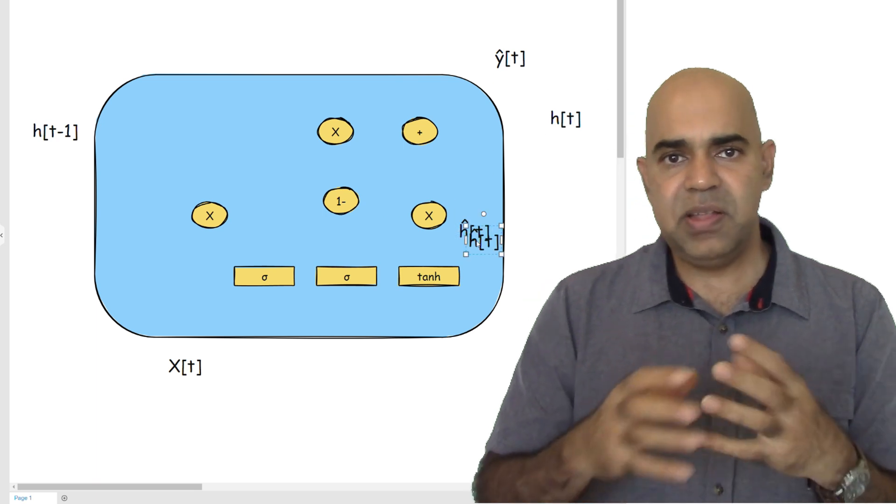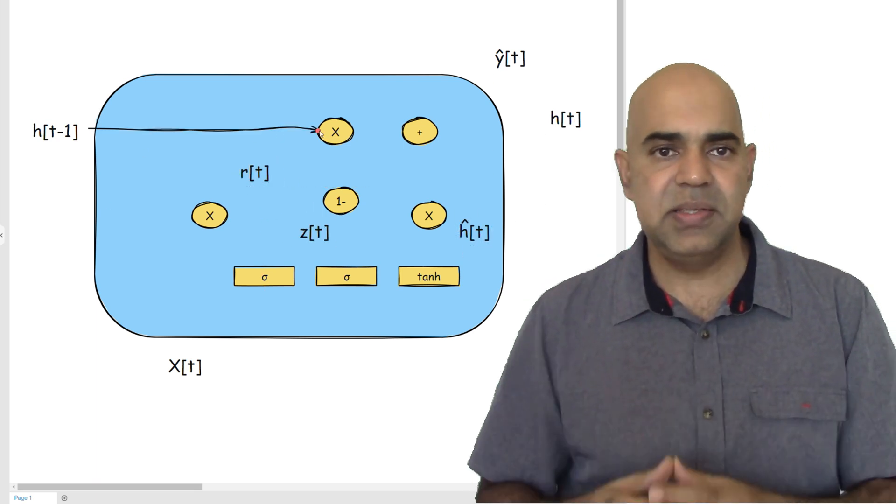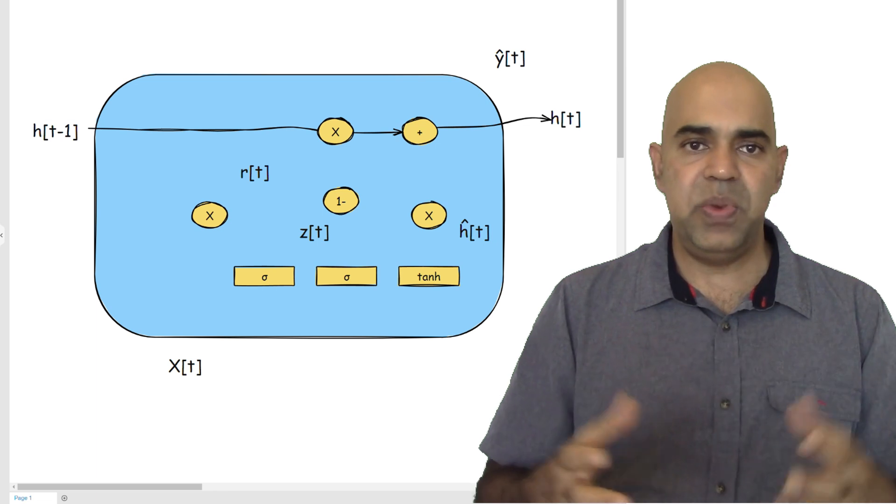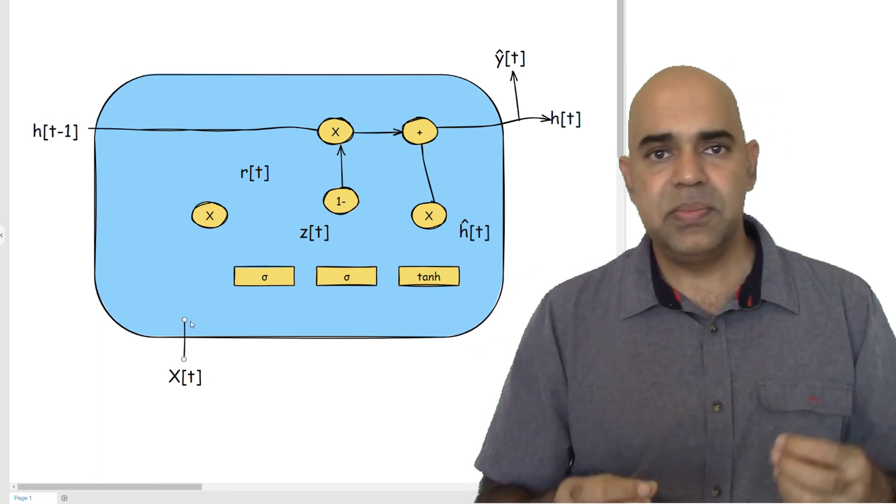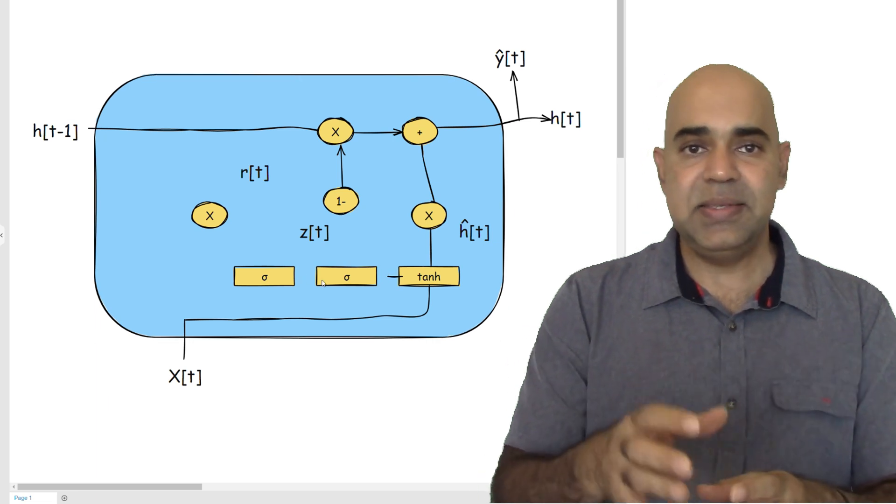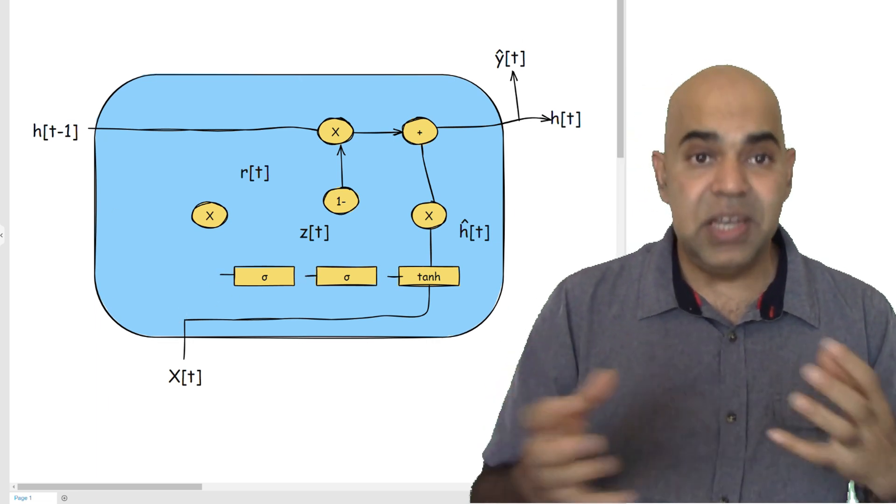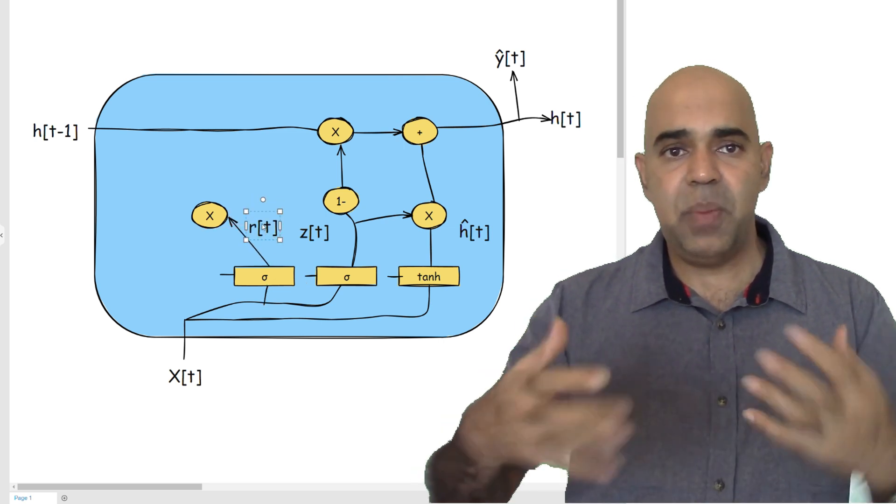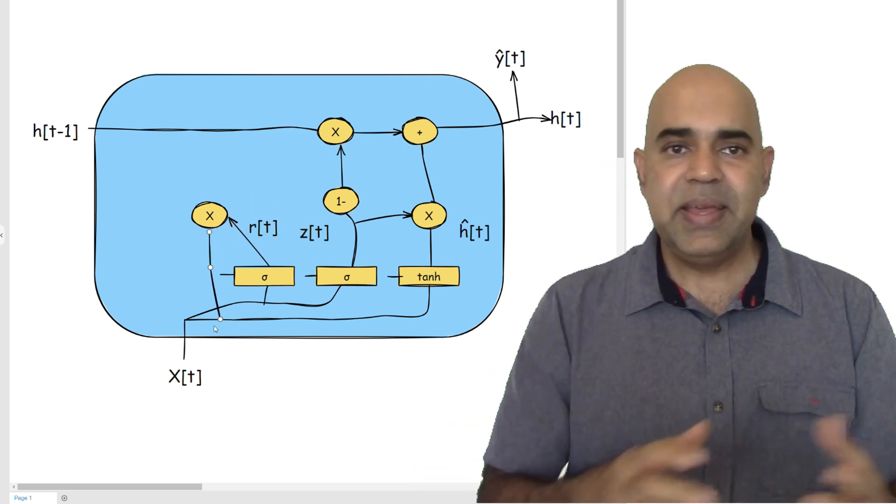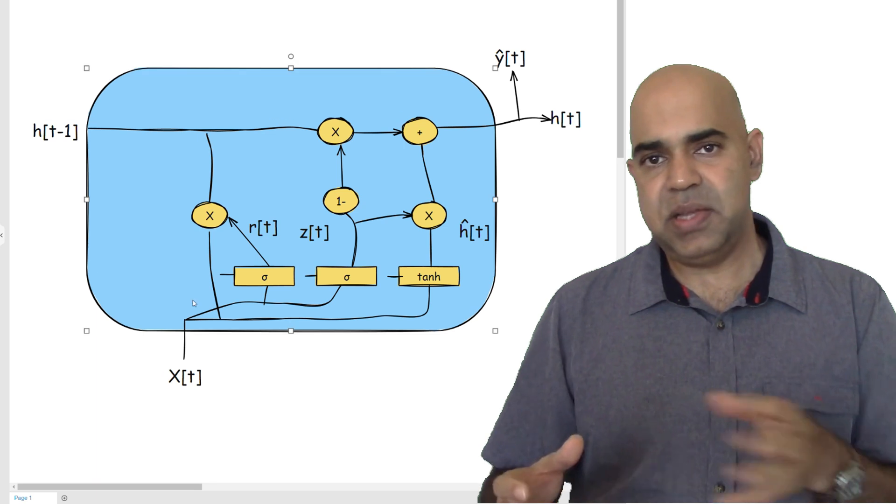GRUs simplify the architecture used in LSTMs. GRUs have shown performance comparable to LSTMs in various tasks. The choice between using an LSTM or a GRU often depends on the specific requirements of the task and the computational resources available. Each has its own strengths and weaknesses.